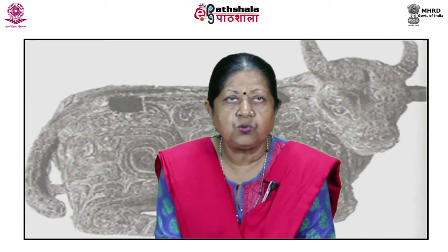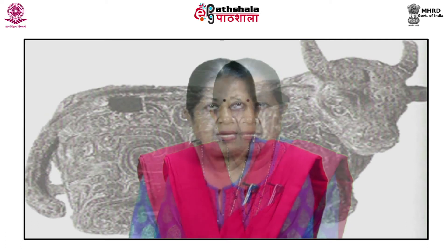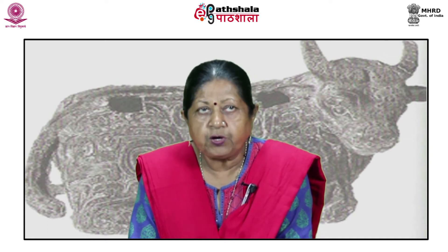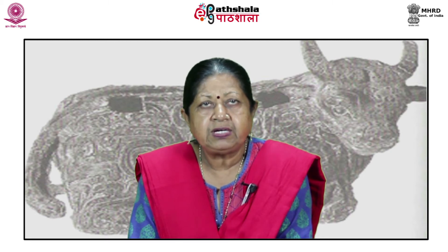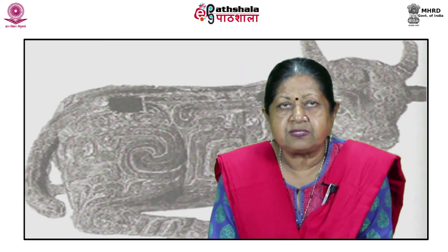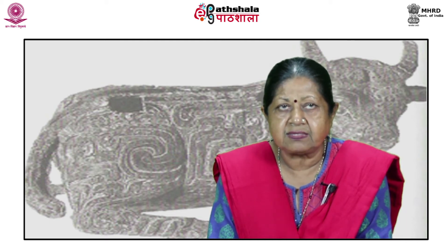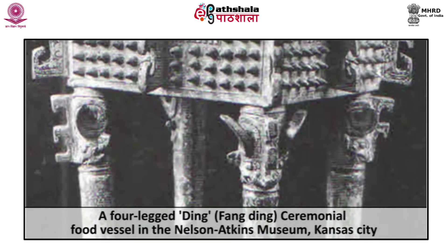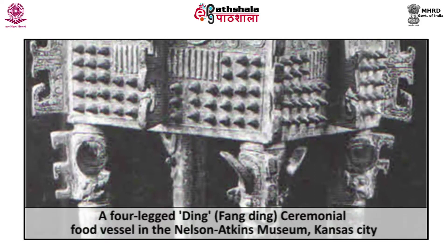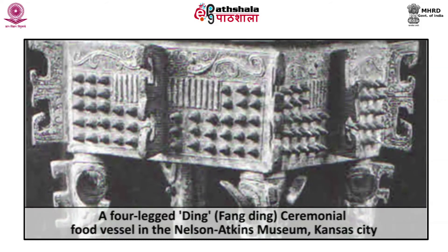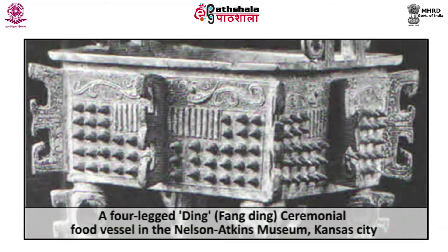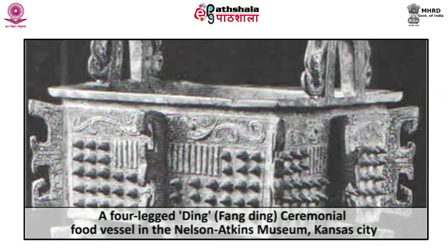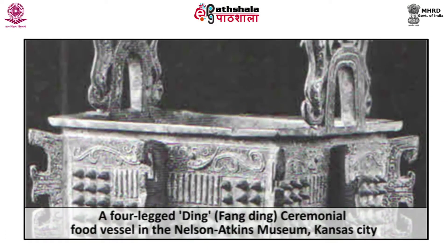The shift from Shang to Early Chau style is seen in several vessels dated by their inscriptions. Most early Shang bronzes had no inscriptions; later in the Shang dynasty, 2, 3, and 4 character inscriptions appear. By the time of the transition to Chau, there are long inscriptions, some of more than 400 characters. An example is a four-legged ding, known as fang ding, a ceremonial food vessel in the Nelson-Atkins Museum, Kansas City, bearing an inscription of three characters dating to the very beginning of the Chau dynasty in the reign of King Chen, which began seven years after the fall of the Shang.